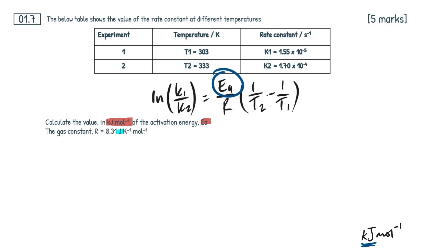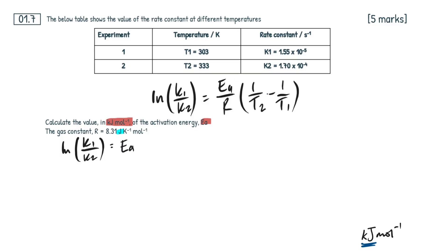LN K1 over K2. I'm going to rewrite this Arrhenius equation in a slightly different format that's going to make it so much easier for us to rearrange. So LN K1 over K2. If you haven't come across this before, LN just stands for natural log, and it's just a button on the calculator — not too difficult. This is going to equal our activation energy EA.